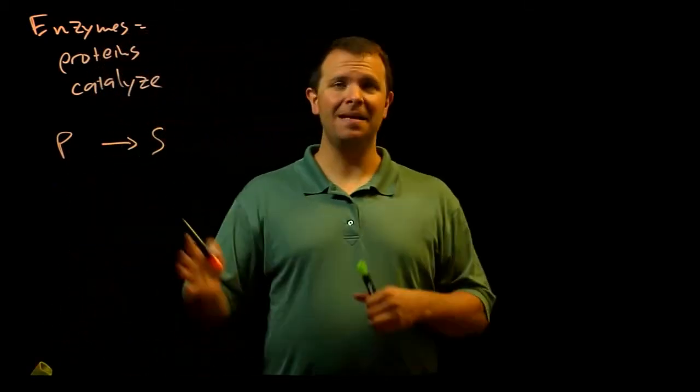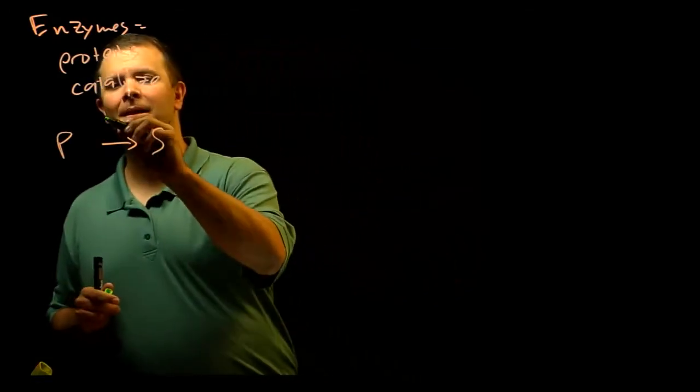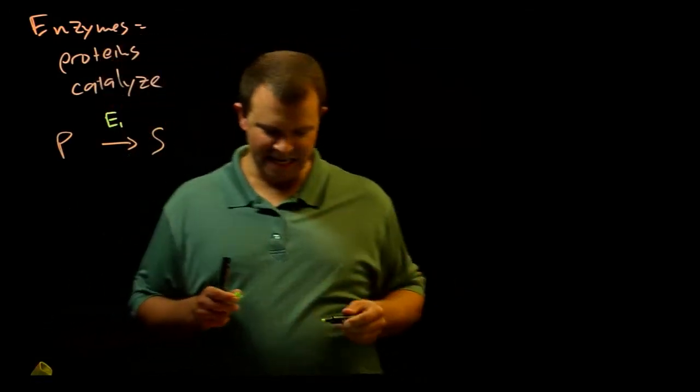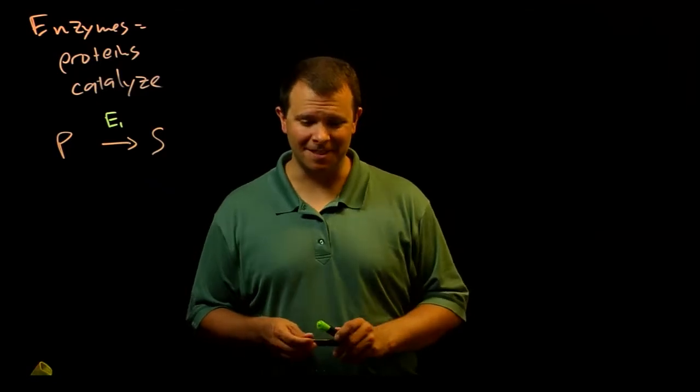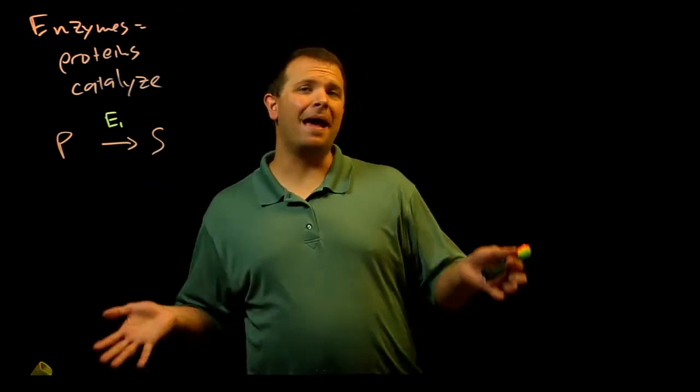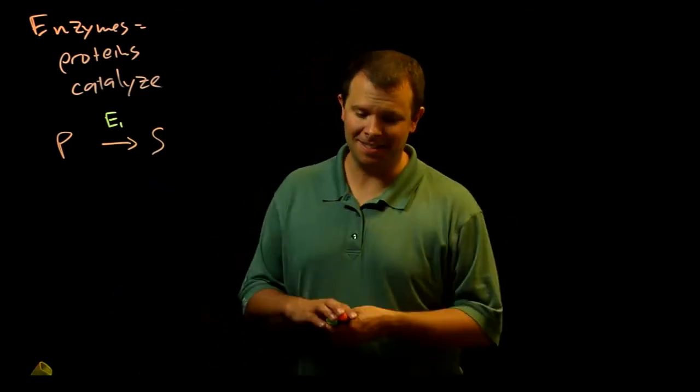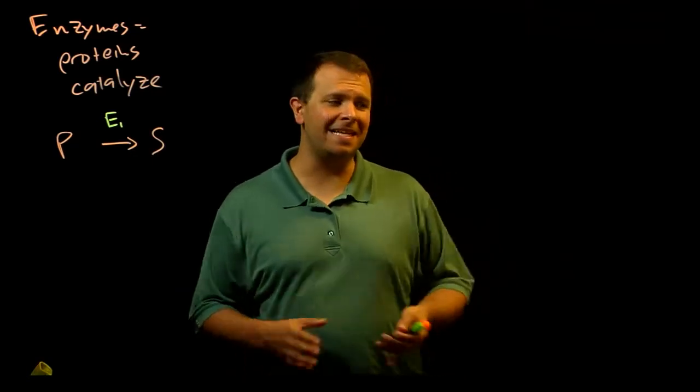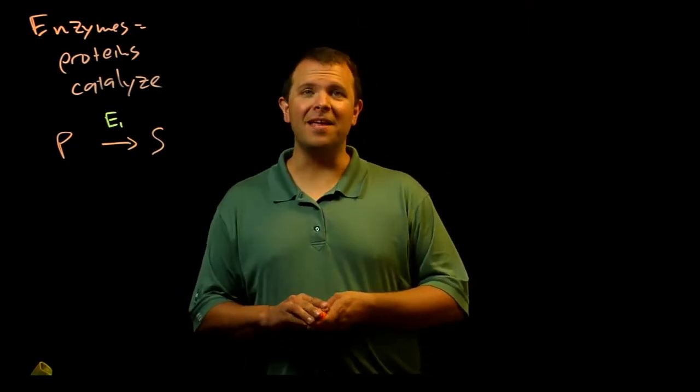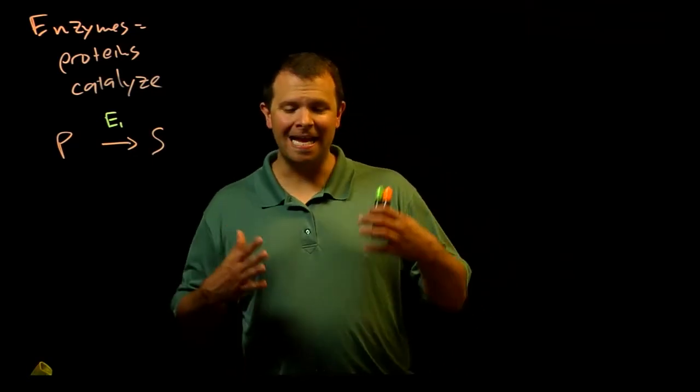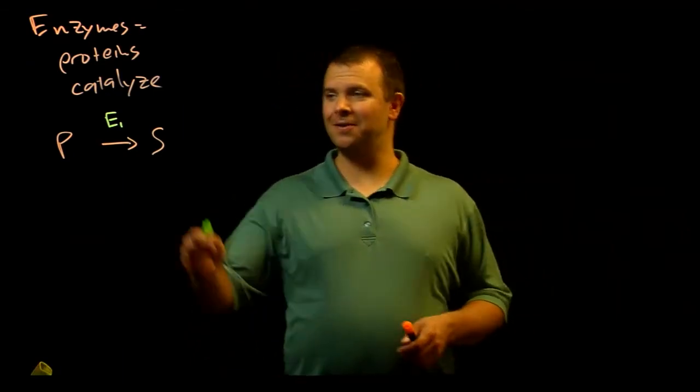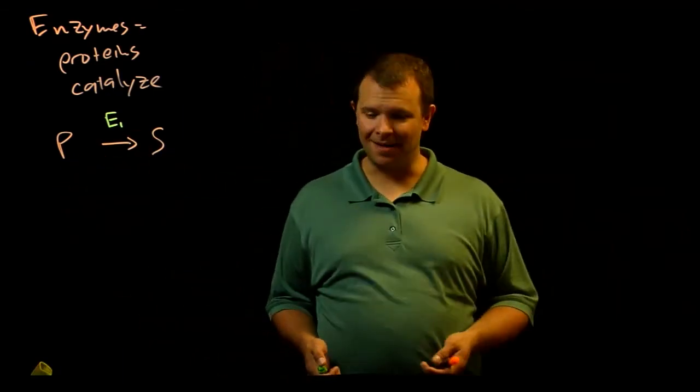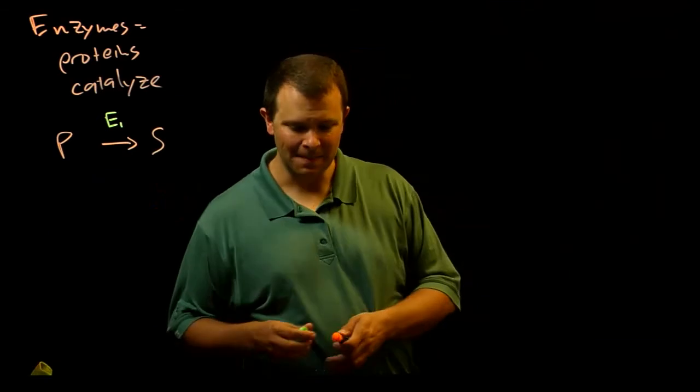And so an enzyme that did this conversion, maybe we'll call it E1. However, there's a lot of chemistry that happens in your cells. So think back to what you know about glycolysis. You might not remember any of the details, but you probably remember that there are a lot of them. There are 10 separate steps required to turn glucose at the beginning of glycolysis into pyruvate at the end of it.